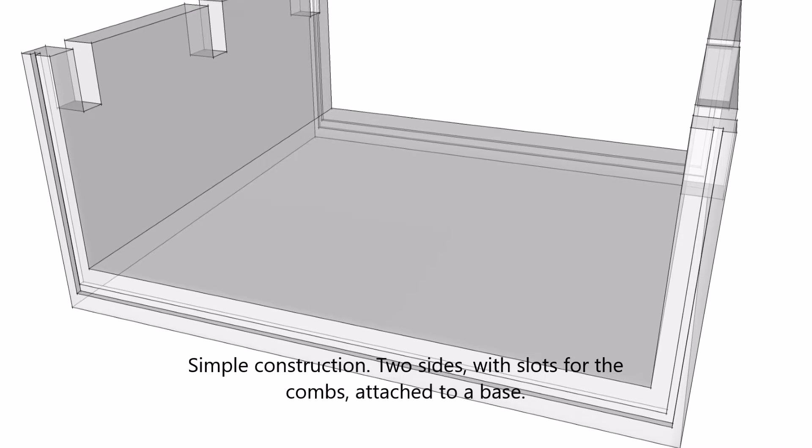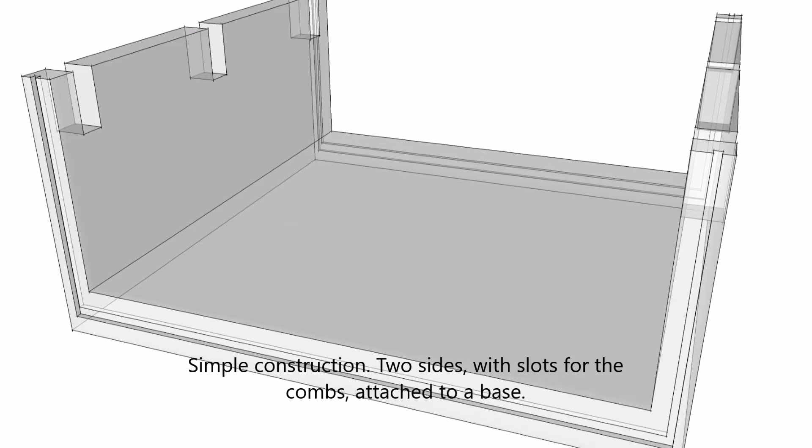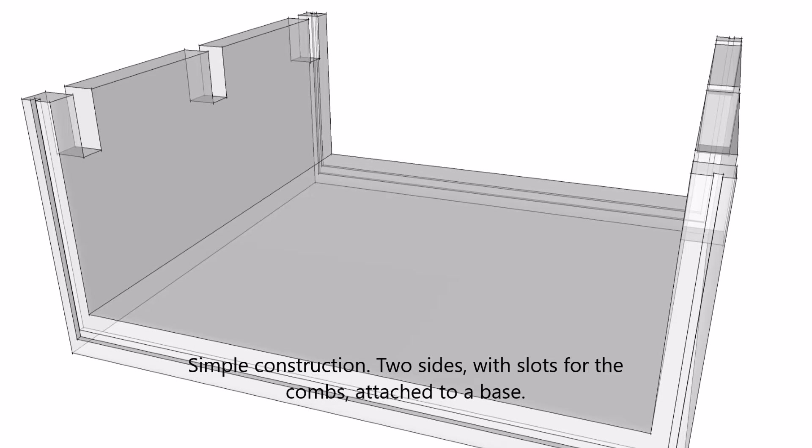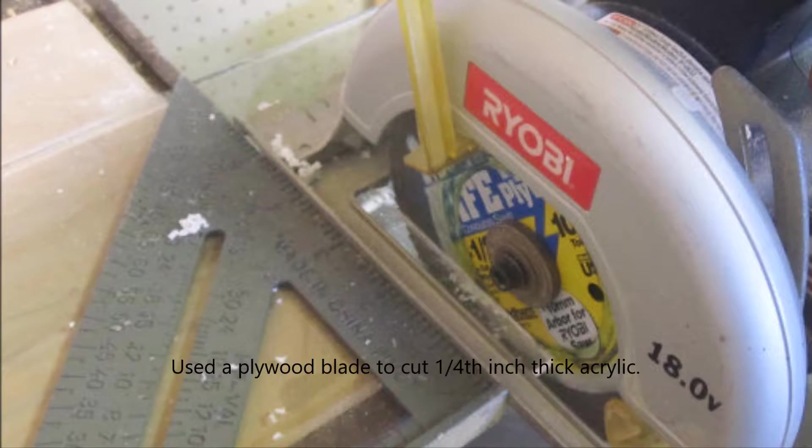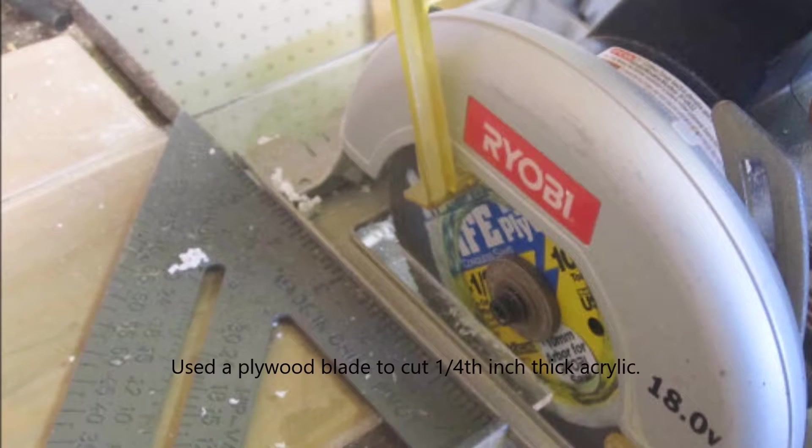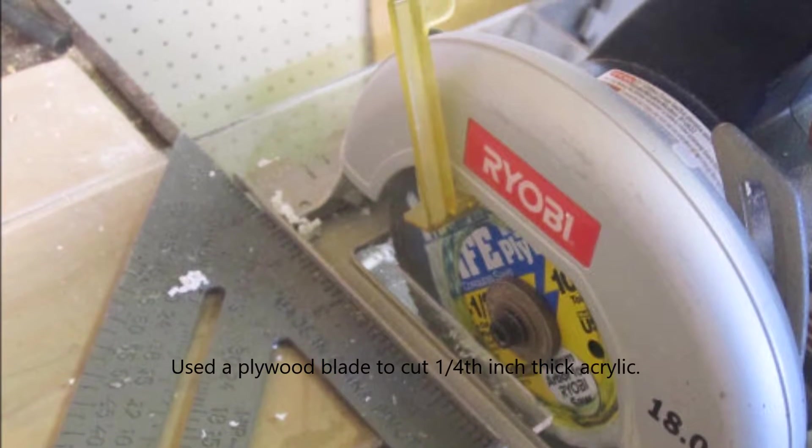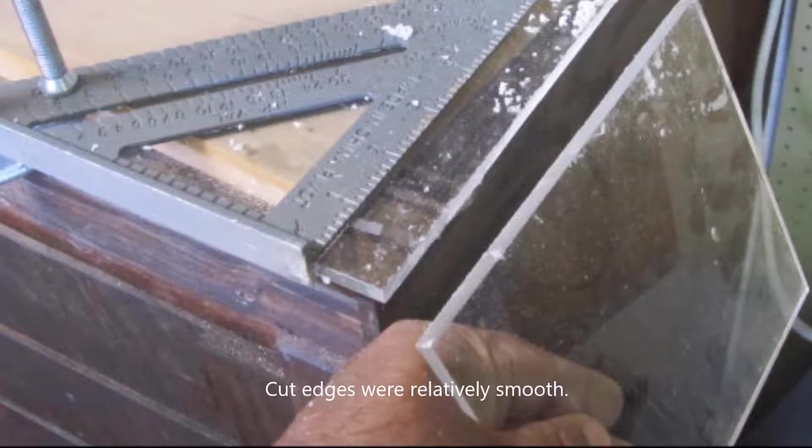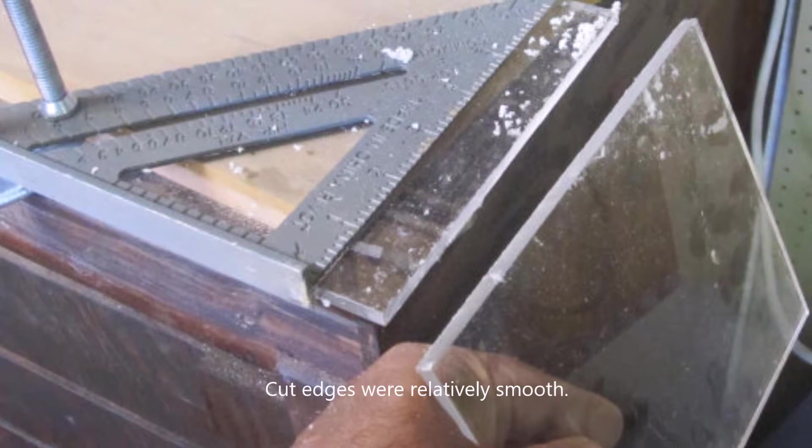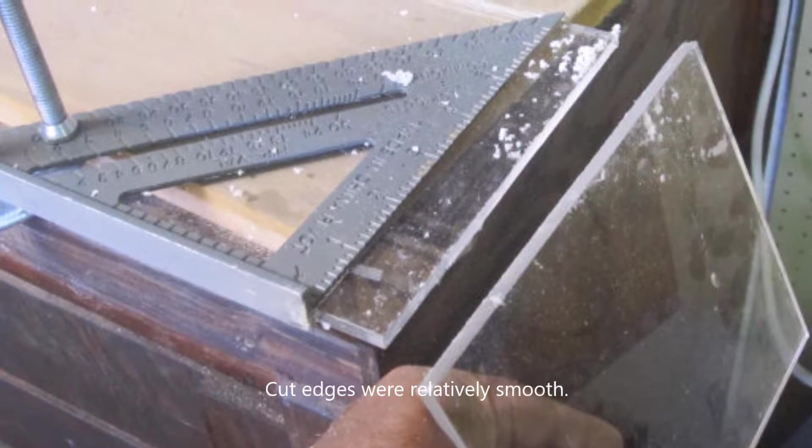So let's start with the gel tray. The gel tray is a simple C-shaped structure, and you can see there are slots cut in the sides that will hold the combs. I used a circular saw with a plywood blade to cut the acrylic - it's 5mm thick acrylic, worked reasonably well, smooth-ish edges.